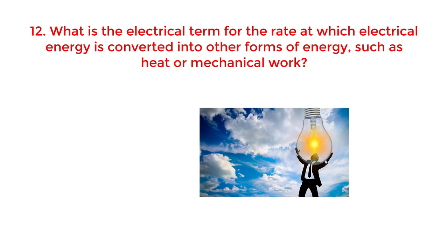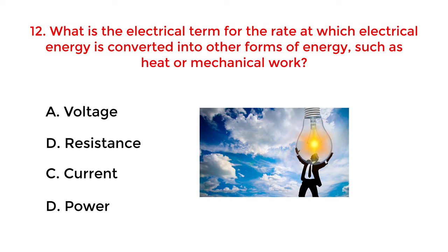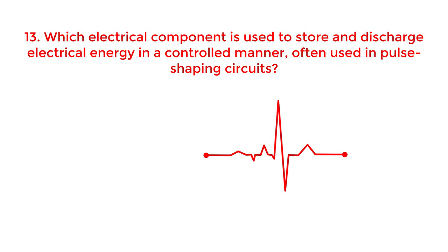What is the electrical term for the rate at which electrical energy is converted into other forms of energy, such as heat or mechanical work? A. Voltage. B. Resistance. C. Current. D. Power. The correct answer is option D: Power.